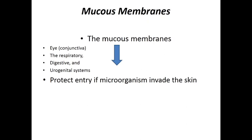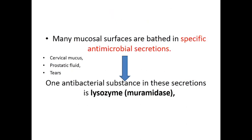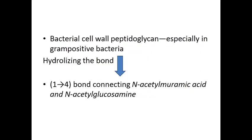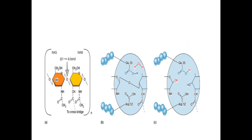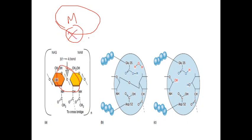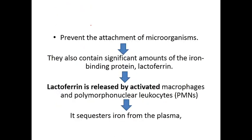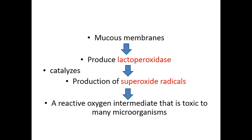The mucous membrane is able to produce many specific antimicrobial secretions containing different chemicals, but the major one is the enzyme lysozyme. This lysozyme enzyme has the ability to cleave the alpha-beta 1-4 linkage present in the cell wall of microorganisms. Once the cell wall is broken, internal components come out and the microorganism is unable to survive.